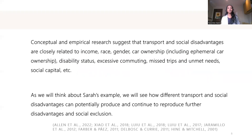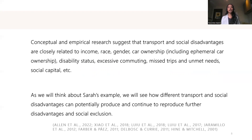Conception and empirical research suggests that transport and social disadvantages are closely related to income, race, gender, car ownership, disability status, immigrant status, excessive commuting, missed rates, unmet needs, social capital, etc. As we think about Sarah's example, we will see how different transport and social disadvantages can potentially produce and continue to reproduce further disadvantages and social exclusion over the long term and across multiple generations.